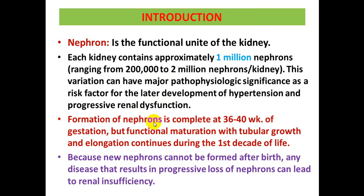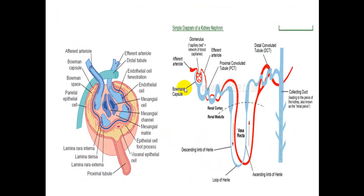Formation of nephrons is complete at 36 to 40 weeks of gestation, but functional maturation with tubular growth and elongation continues during the first decade of life. Because new nephrons cannot be formed after birth, any disease resulting in progressive loss of nephrons can lead to renal insufficiency later on.